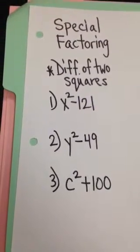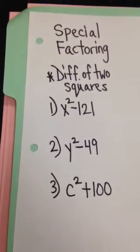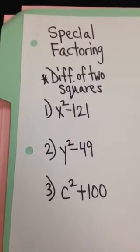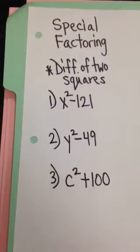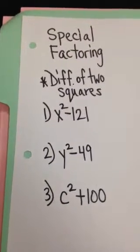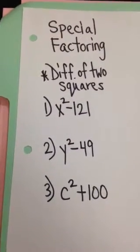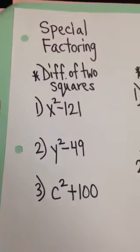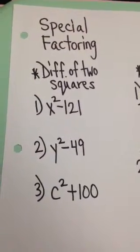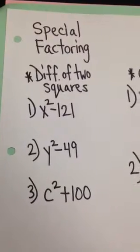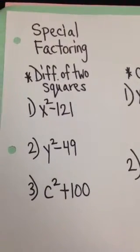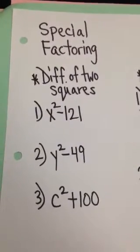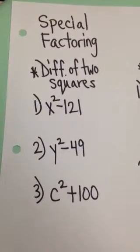There are certain binomials and in some cases trinomials that require special factoring techniques. One of those special factoring techniques is using the difference of two squares. If you have a perfect square root and a binomial separated by a minus sign, then more than likely you could use the difference of two squares.